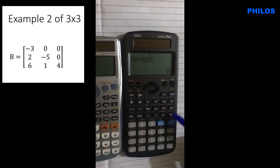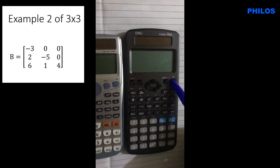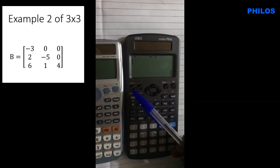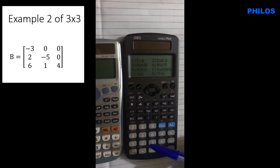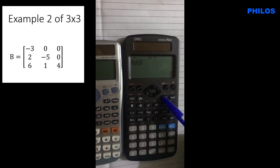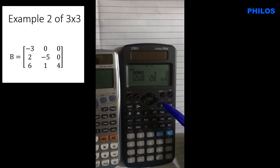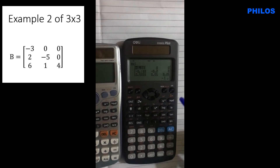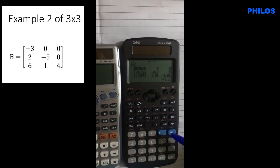To get the inverse of matrix B, press AC, then Shift, option 4, option 4 for Mat B, then press x^(−1) for the inverse. Press equals to get your answer. The first element is −1/3, which is approximately −0.333, followed by zeros, and the remaining elements follow similarly.